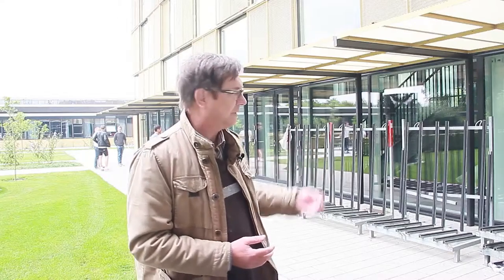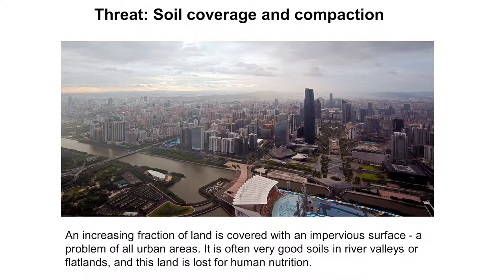Finally, soil coverage and compaction: where buildings and roads exist, nothing can grow, and even after removal of a street the good soil doesn't come back — the topsoil is removed and the soil is compacted, making agriculture impossible. This is a problem in all urban areas, and cities are often located in the most fertile areas: river deltas and river valleys. Once land is sealed, it is lost for human nutrition.